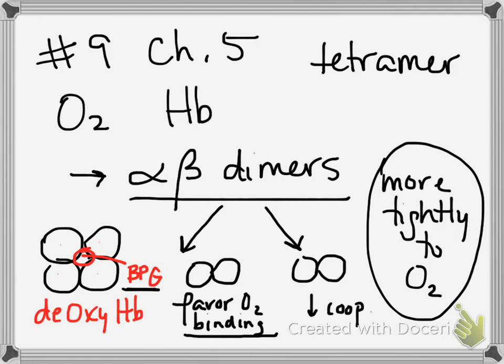So think about it this way. Myoglobin doesn't exhibit any cooperativity because there's only one subunit. It has a very tight binding to O2. Now with just two dimers, when you're decreasing the cooperativity, you're also resulting in more tight binding to O2.